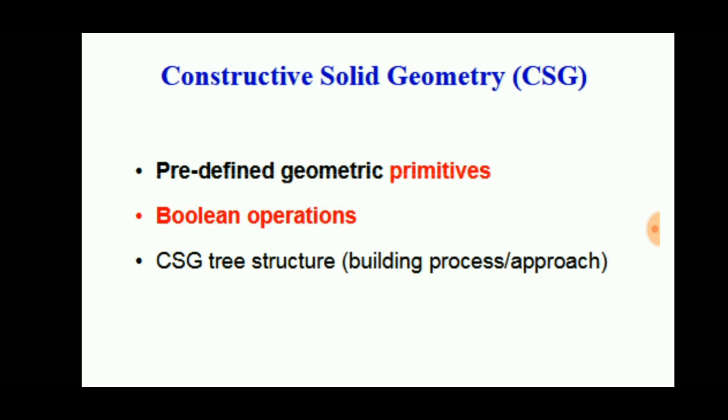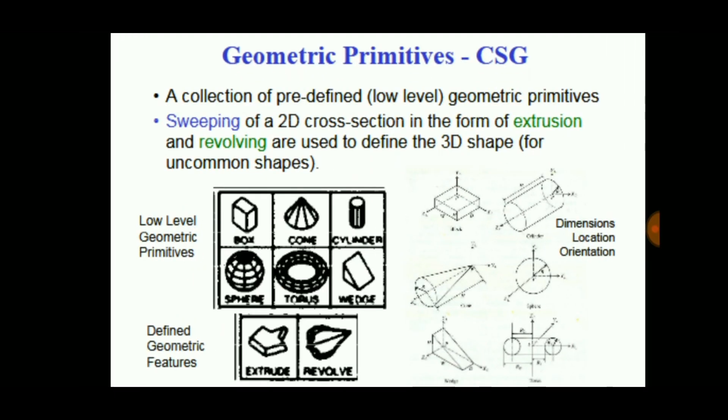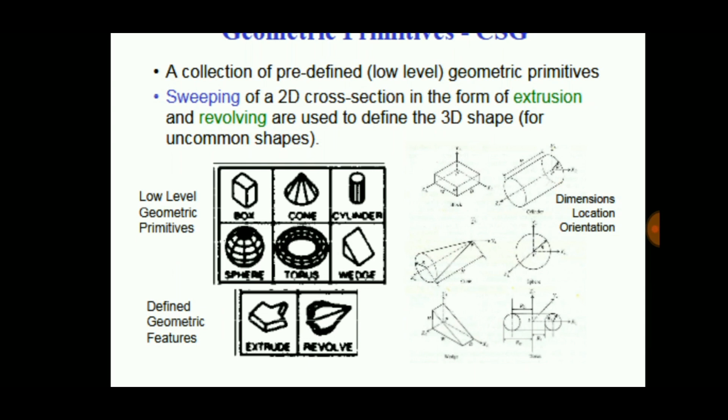The CSG tree structure is present. When we do any operation, the operations are listed around or below the CSG tree. These geometry primitives are seen in software such as AutoCAD, which is present on the top of the tab.